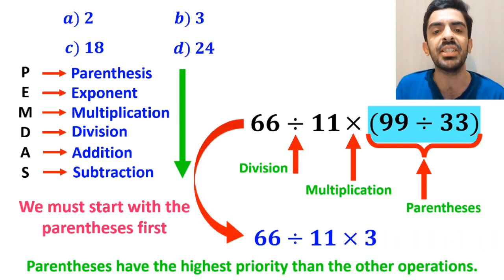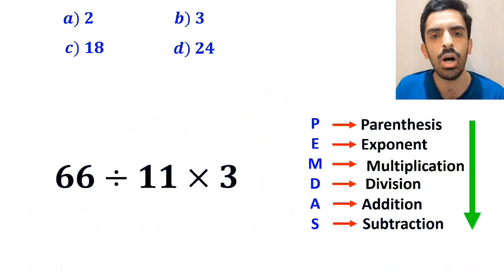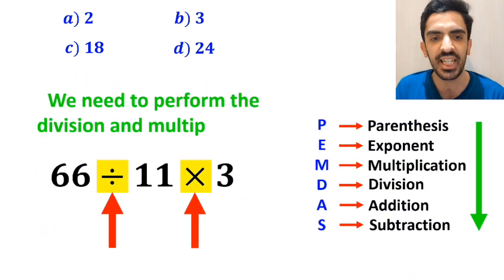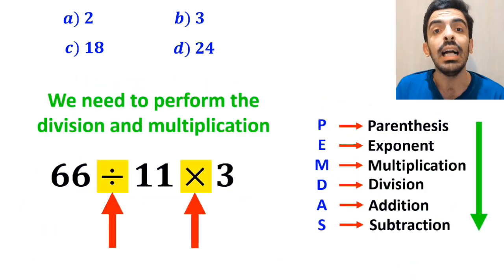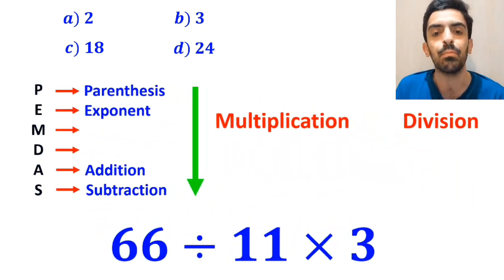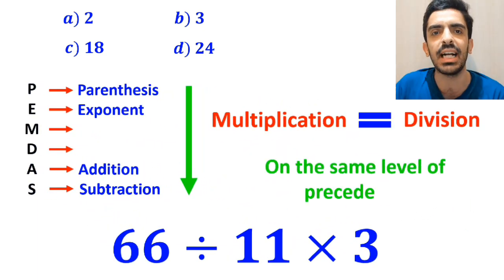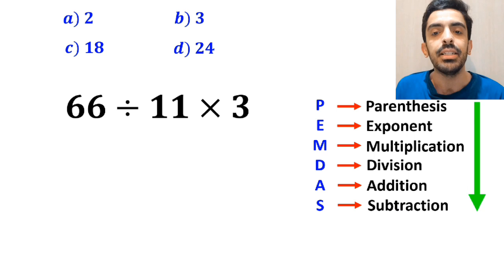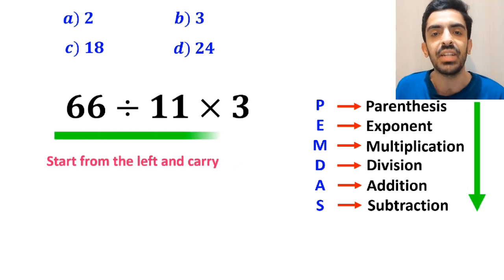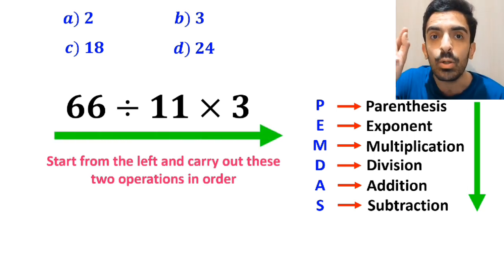So we can rewrite this expression as 66 divided by 11 multiplied by 3. Now, we need to perform the division and multiplication. However, it's very important to keep in mind that multiplication and division are on the same level of precedence. In this case, the best approach is to start from the left and carry out these two operations in order.